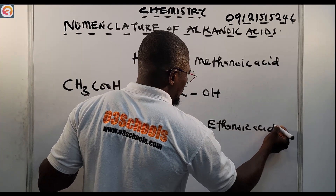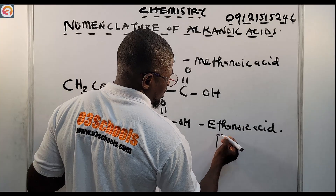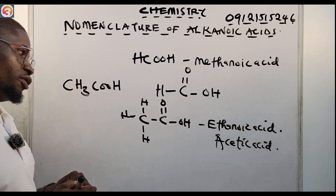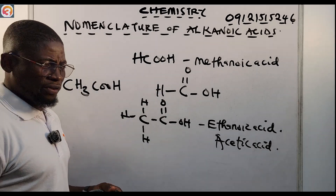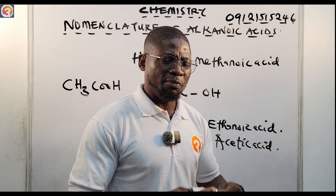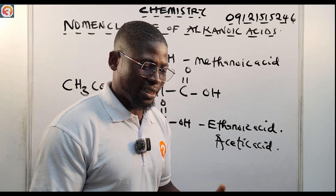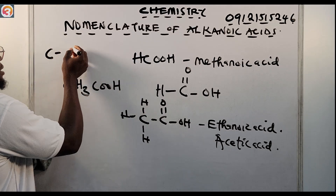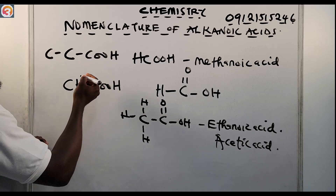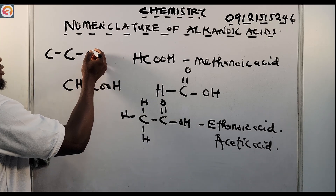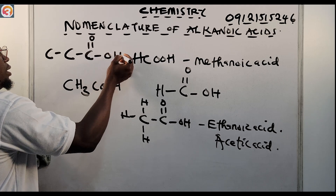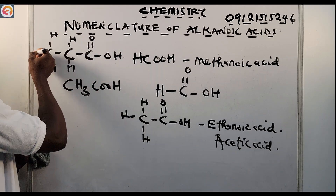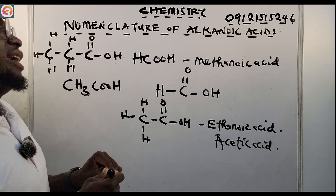Ethanoic acid is also called acetic acid — that is the common name. Now let us metamorphose to propanoic acid, also called propionic acid. That would be C-C-COOH, and you can show the bonds with all the hydrogens. These are propionic acid or propanoic acid.